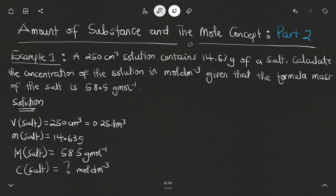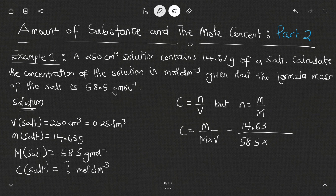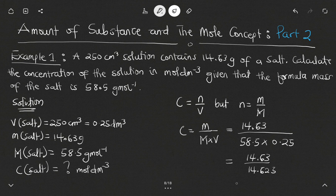We know concentration = moles / volume, and moles = mass / molar mass. Substituting, concentration = mass / (molar mass × volume) = 14.63 / (58.5 × 0.25). The denominator gives 14.625, so concentration = 14.63 / 14.625 = 1.00 mol per dm³.